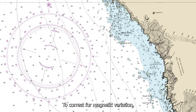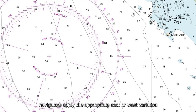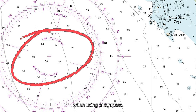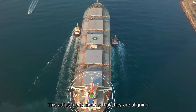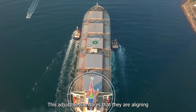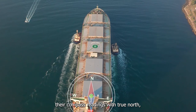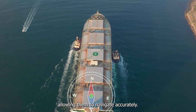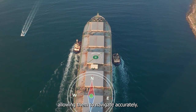To correct for magnetic variation, navigators apply the appropriate east or west variation when using a compass. This adjustment ensures that they are aligning their compass readings with true north, allowing them to navigate accurately.